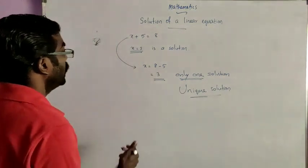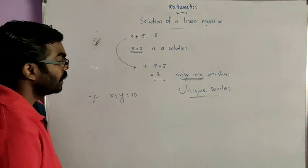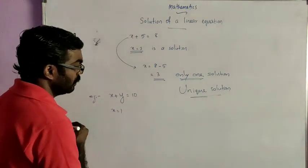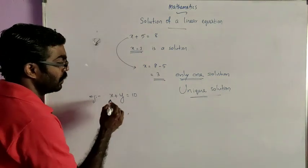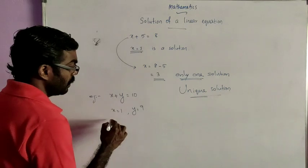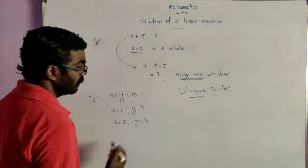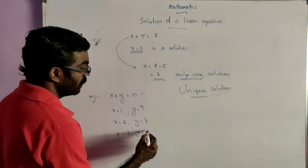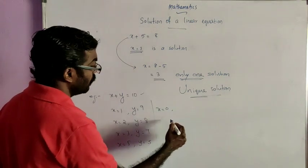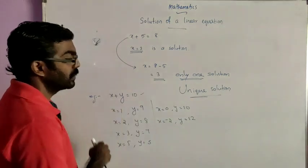Now let us take one example of a linear equation in two variables: x plus y is equal to 10. Let us check the values of x and y which satisfy the given equation. If x is 1, then 1 plus y equals 10, so y equals 9. If x is 2, y is 8. If x is 3, y is 7. If x is 5, y is 5. If x is 0, y is 10. If x is minus 2, then y is 12.